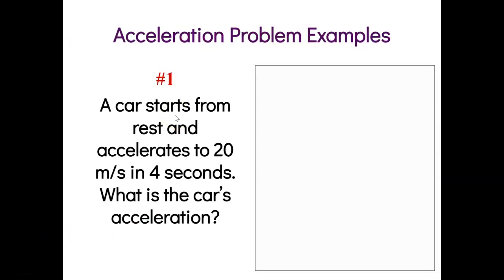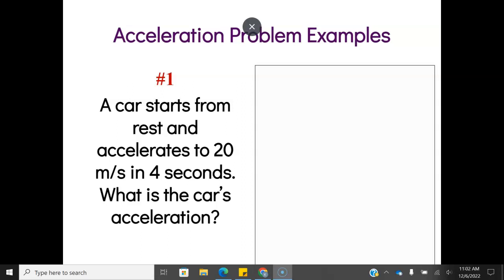Let's work some example problems using the new formula. Question one: a car starts from rest and accelerates to 20 meters per second in four seconds. What is the car's acceleration? We're going to use the acceleration formula. The first thing I want you to always do with motion problems is identify the equation you're going to use and list your variables before plugging anything in.